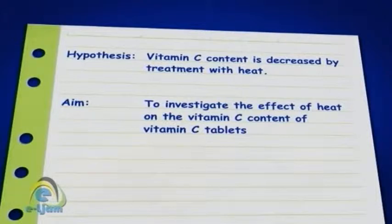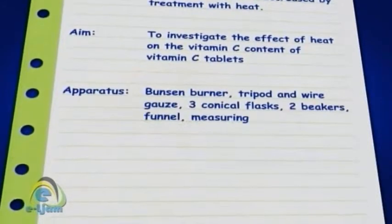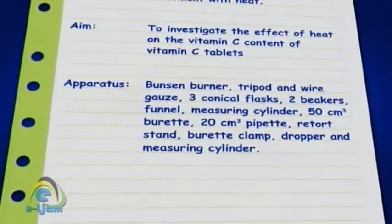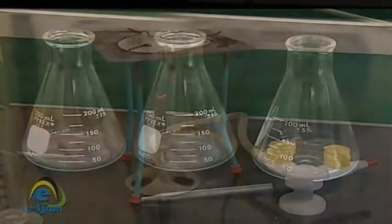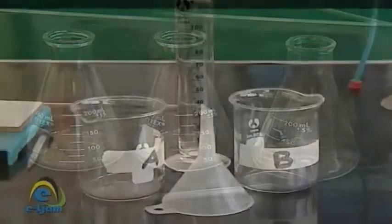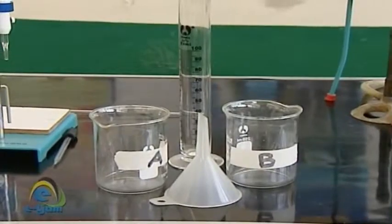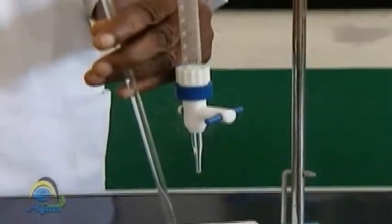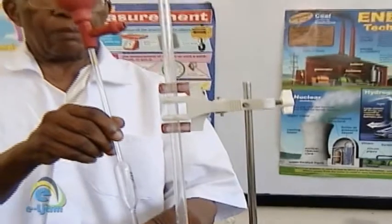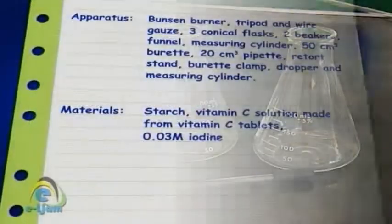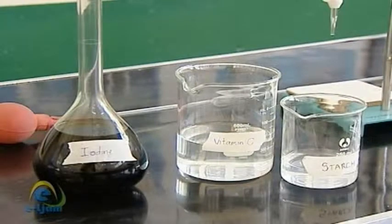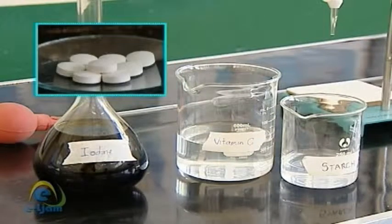It is necessary for you now to list all of the apparatus and materials that you will need to test your hypothesis. Apparatus: Bunsen burner, tripod and wire gauze, three conical flasks, two beakers, funnel, measuring cylinder, 50 cubic centimeter burette, 20 cubic centimeter pipette, retort stand, burette clamp, dropper. Materials: starch, vitamin C solution made from vitamin C tablets, 0.03 molar iodine.